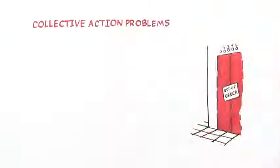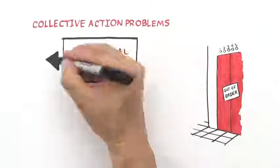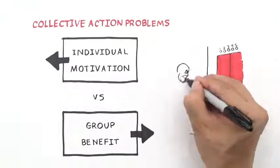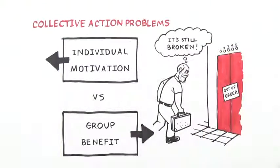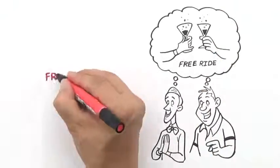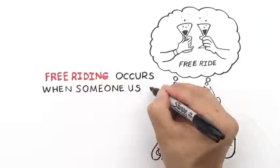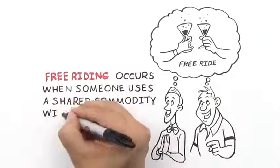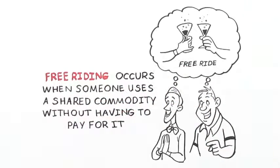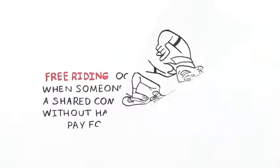Collective action problems occur when the incentives and motivations of individuals run counter to what is good for the group. I broke down because I was overworked. The incentive to free ride also constrained collective action. Free riding occurs when someone can use a shared commodity, or what economists call a public good, without having to pay for it. It's a common phenomenon that plagues collective action.